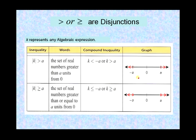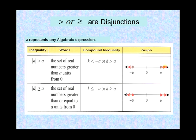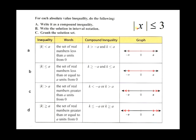For a disjunction, k is still any algebraic expression and a is a real number. The absolute value of k is greater than a — meaning the set of real numbers greater than a units from zero. The compound inequality is: k is less than the opposite of a, OR k is greater than a. On the graph, we place open circles at a and negative a, with arrows going outward in both directions.